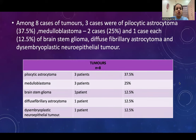Among 8 patients with tumour, 3 were of pilocytic astrocytoma, 2 of medulloblastoma, and 1 case each of brain stem glioma, diffuse fibrillary astrocytoma, and dysembryoplastic neuroepithelial tumour.